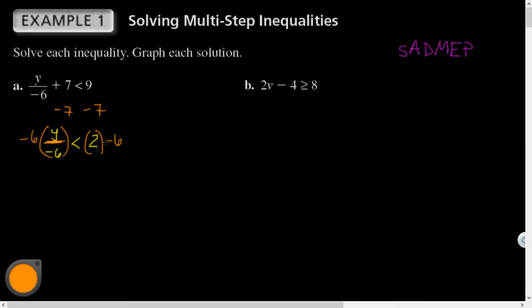Let's see. Y is being divided by negative 6. So the inverse operation would be to multiply by negative 6. Make sure you throw parentheses there just so it doesn't look like 2 minus 6. That would be weird. Minus signs cancel out, 6s cancel out, I get y. Flip that inequality because I multiplied by a negative is greater than negative 12.